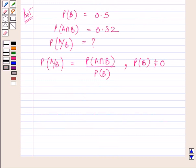We have probability of A intersection B equals 0.32, so we will substitute 0.32 here. Probability of B equals 0.5, so we will substitute 0.5 here. We get probability of A upon B equals 0.32 upon 0.5.